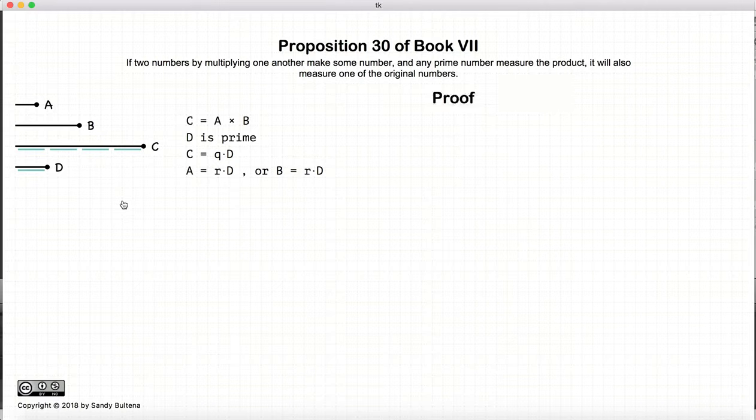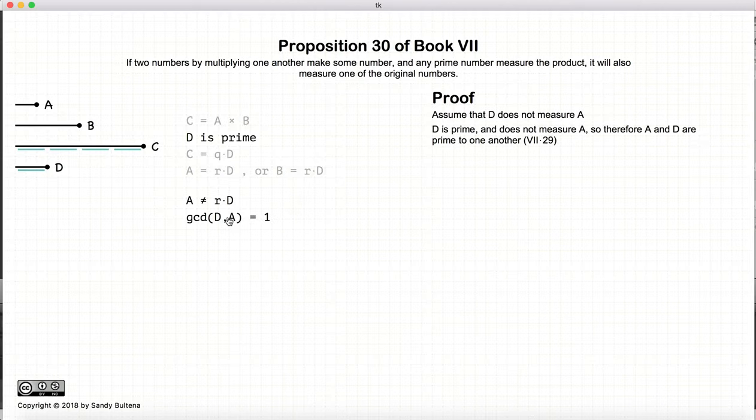So let's prove this. Let's assume that D does not measure A, which means that since D is prime and D does not measure A, then from the previous proposition we know that D and A are relatively prime.